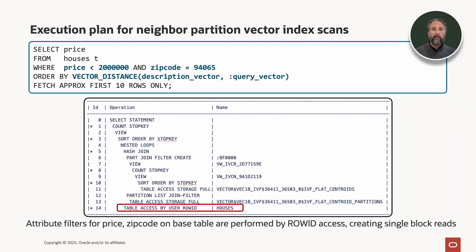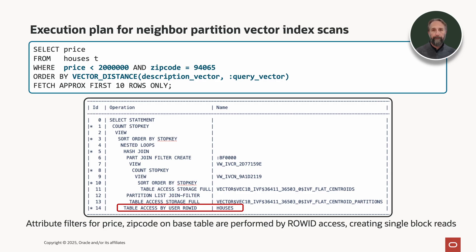If we look at the execution plan for this query, we can see AI smart scan in full action using the table access storage full operation on the vector index itself. However, the attribute filters for price and zip code on the base table are performed using a row ID access, creating extra IO using single block reads.